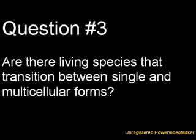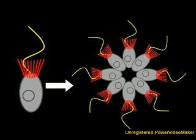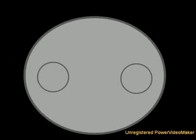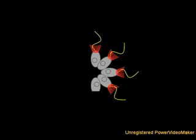Question 3: Are there living species that transition between single and multicellular forms? Yes. There is one species of choanoflagellate that, upon sensing a particular bacteria in its environment, transitions from unicellular to multicellular in a very interesting way. When it divides, cell division is halted just before it finishes, keeping the cells attached by a small cytoplasmic bridge. So rather than growing by clumping, this organism grows from a single cell by keeping daughter cells attached, making it a true multicellular organism.